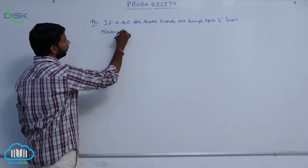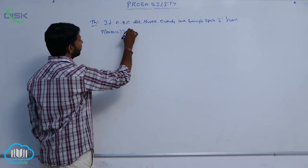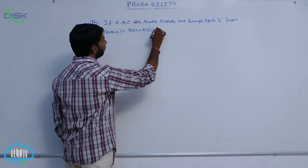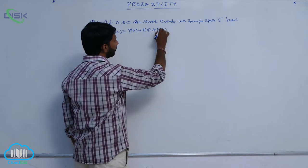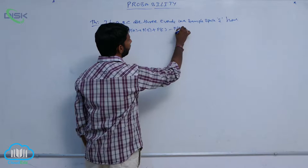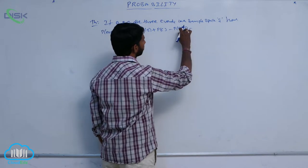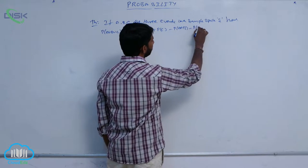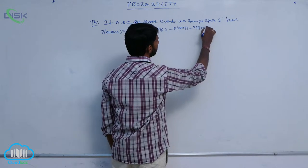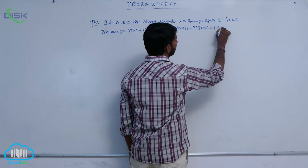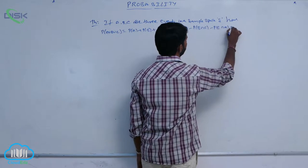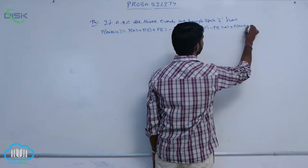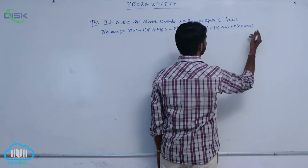P of A union B union C is equal to P of A plus P of B plus P of C minus P of A intersection B minus P of B intersection C minus P of C intersection A plus P of A intersection B intersection C.